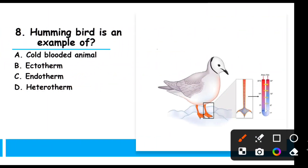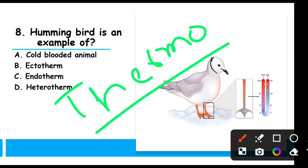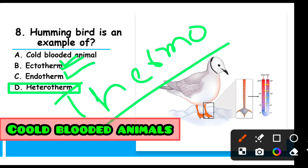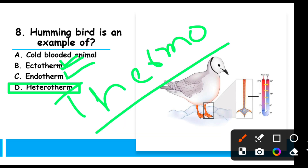MCQ 8: Hummingbird is an example of — this question is about thermoregulation. Thermo means temperature and regulation means its control. All birds are heteroterms — animals that can maintain their body temperature to some extent but still depend on external factors. Endoterms, or warm-blooded animals, can completely maintain their body temperature without depending on external factors, like humans. Ectoterms, or cold-blooded animals, completely depend on the external environment for temperature regulation.